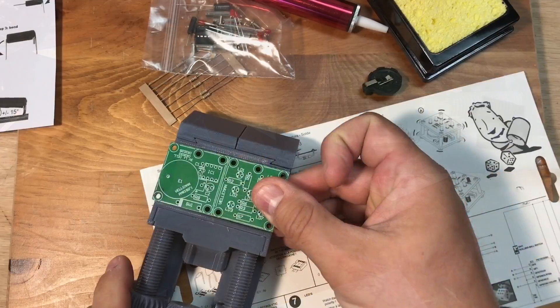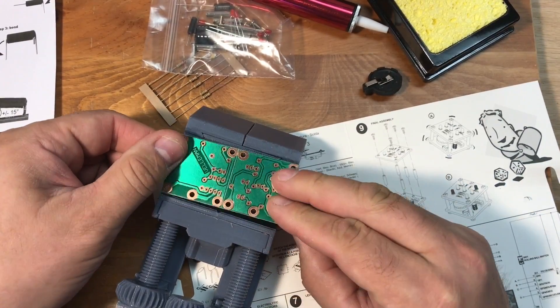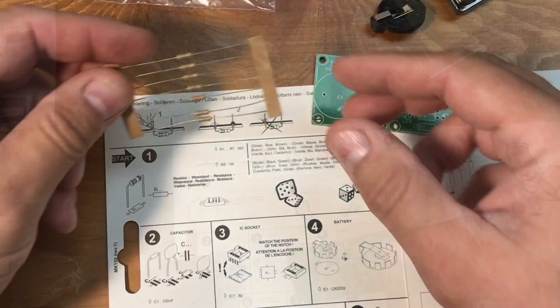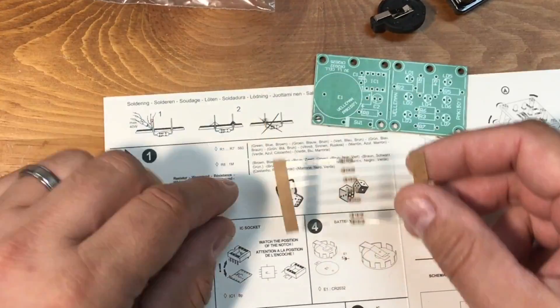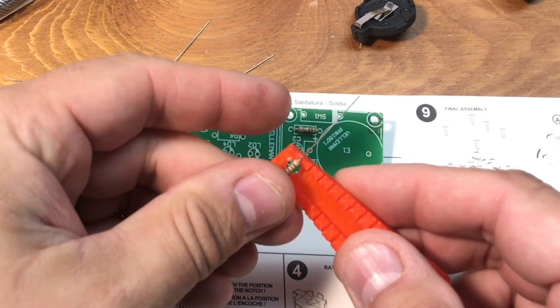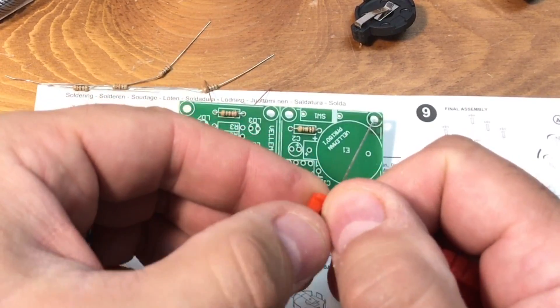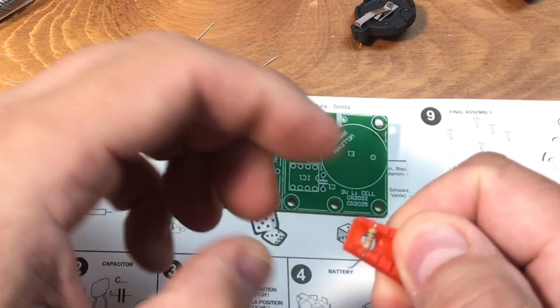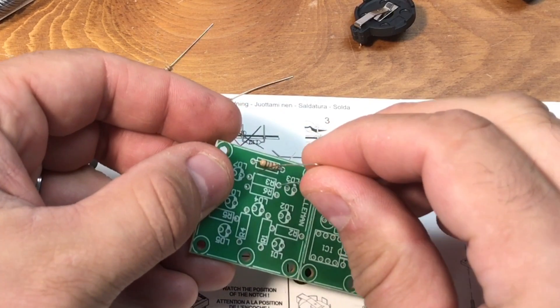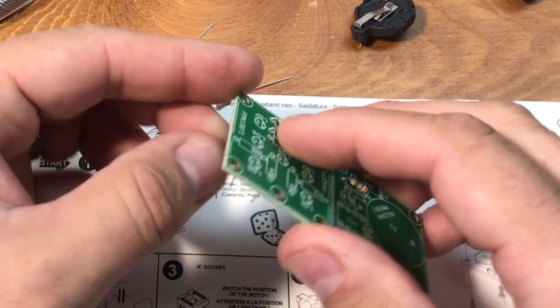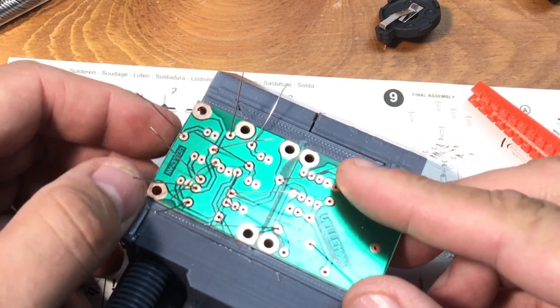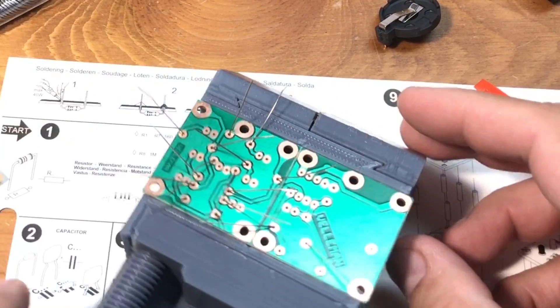I got out my vise, my 3D printed vise to hold the circuit board, and adjusted it to hold this board. Everything looked good, so I moved on to step one, and it says install the resistors. R1 through R7 here are these 560 ohm resistors, and then there's a 1 megaohm resistor. So I put the 1 megaohm in first, and then I went about bending the 560s with the 3D printed bender tool that I reviewed in a previous Filament Friday.